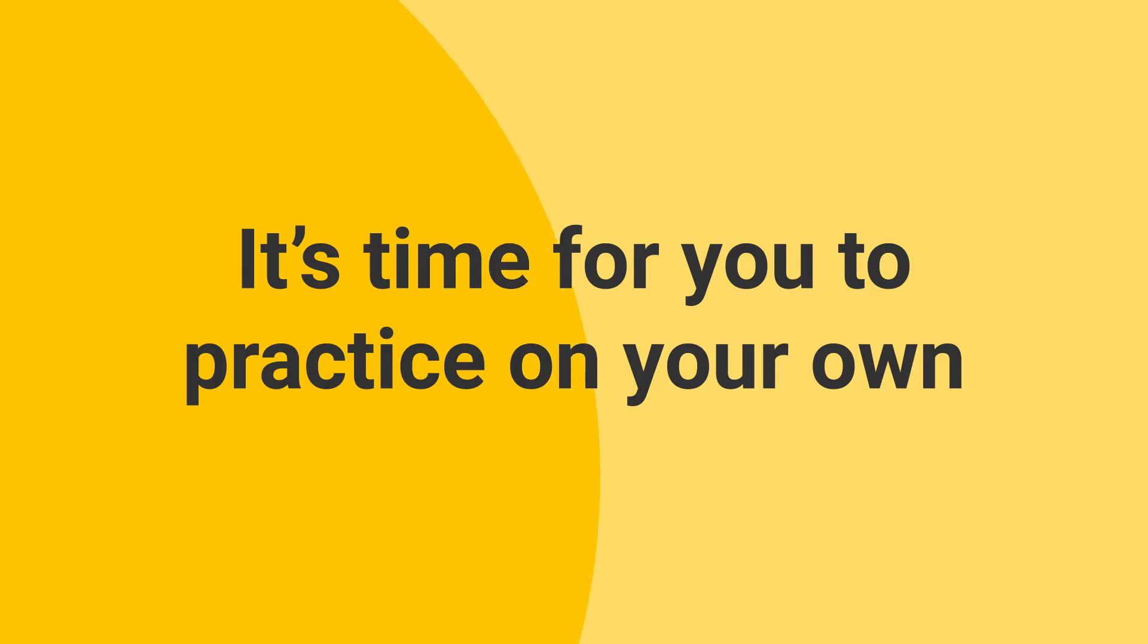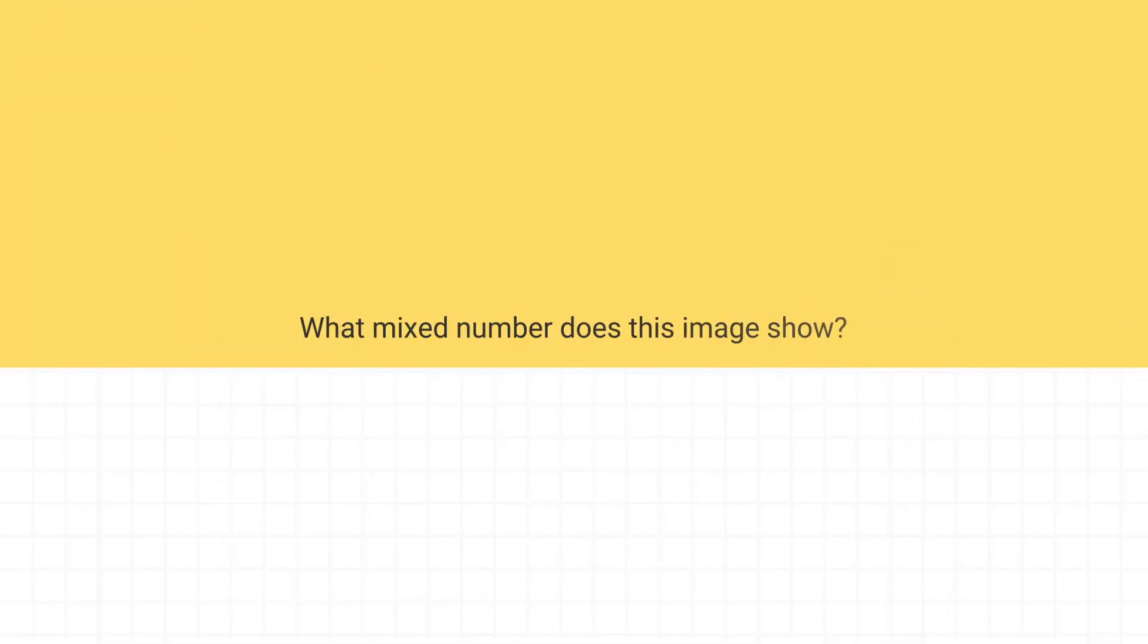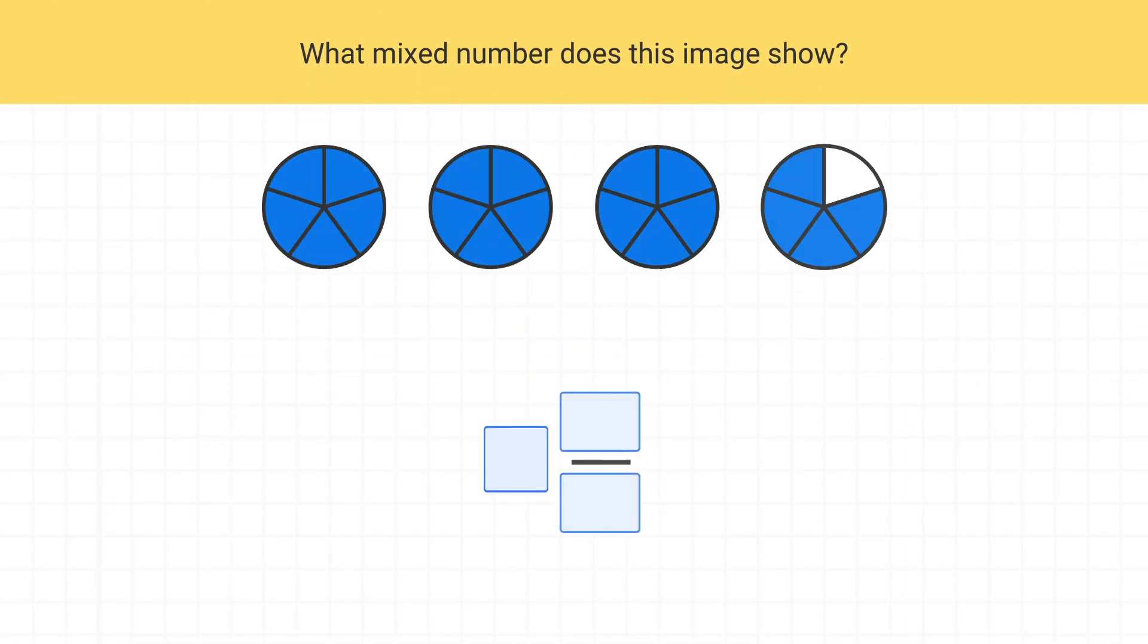Now it's time for you to practice on your own. What mixed number does this image show? In this image, we have three circles that are fully shaded. So we write a three as our whole number. Then we can see in this last circle that four pieces are shaded out of a total of five. So four-fifths of the circle is shaded. Our mixed number is three and four-fifths.